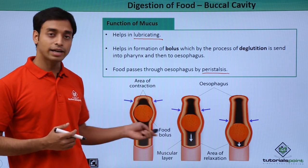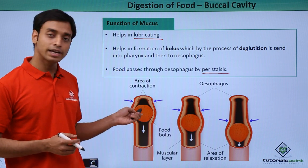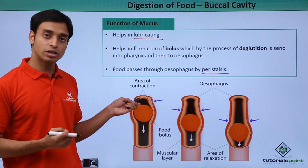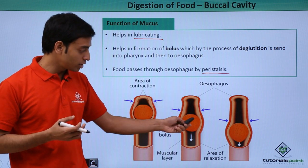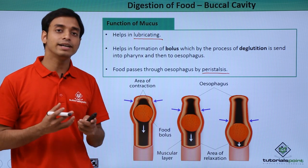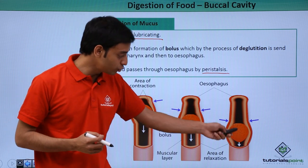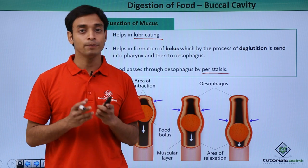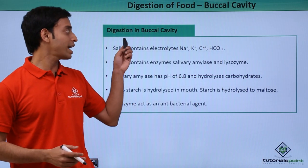Peristalsis is the process of alternate rhythmic contraction and relaxation of the muscle layers in the esophagus. Looking at this figure, the bolus is at a position where the muscle cells start contracting, pushing the bolus downward. The muscles just above the bolus then contract in turn, moving it further down. This rhythmic contraction and relaxation of the muscles of the esophagus is known as peristalsis.